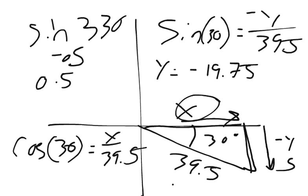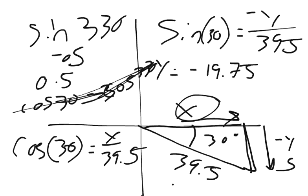Now, if you do cosine of 30, it equals cosine of 330. So, you're going to get the same answer for x. And you'll get the negative answer for y. So, cosine of 30 equals x over 39.5.